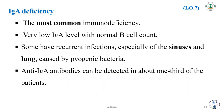IgA deficiency is the most common immunodeficiency, characterized by low IgA levels with normal B cell count. Some patients have recurrent infections, especially of the sinuses and lungs, caused by pyogenic bacteria. Anti-IgA antibodies can be detected in about one-third of patients.